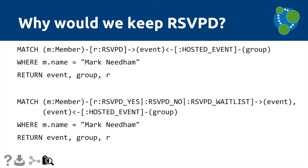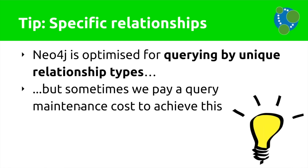The advantage of keeping a single RSVP relationship is that if we want to show a profile page listing all events someone attended with their yes, no, and waiting-list responses, it's a simple query: find the member, find all RSVPs and events, list them. If we went with the second model using RSVP_YES, RSVP_NO, RSVP_WAITING_LIST separately, we'd end up with something more complicated. Again, we've got to trade off what makes sense for your domain — maybe we keep RSVP and accept it might be slightly slow for some queries, or go with the more specific relationship types.